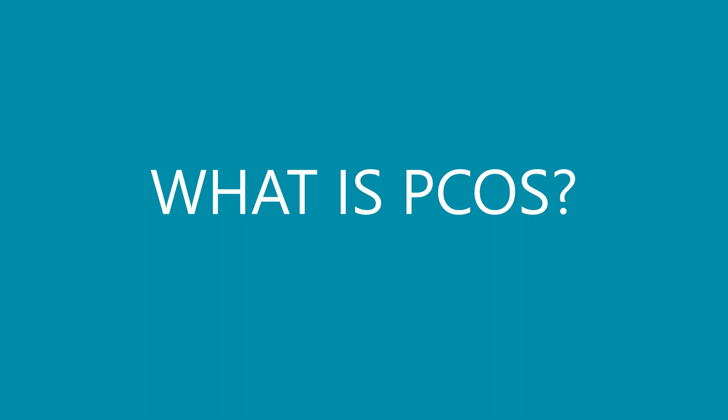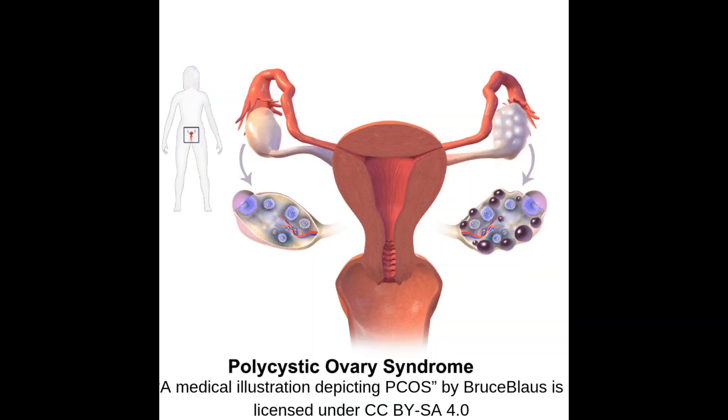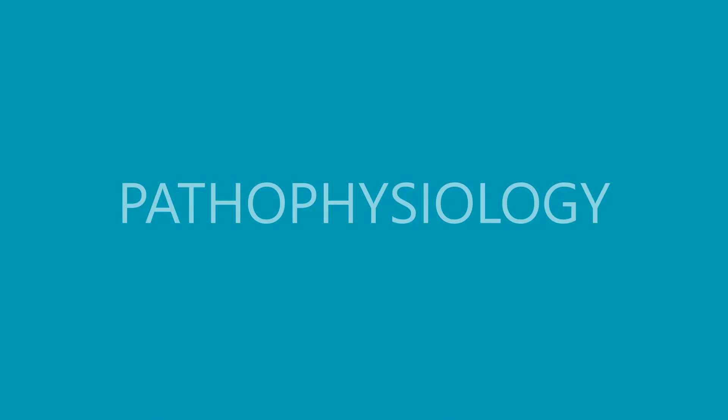What exactly is polycystic ovarian syndrome? Breaking down the word: 'poly' means multiple or many, 'cystic' means cyst, so polycystic ovary means the presence of multiple cysts in the ovary.